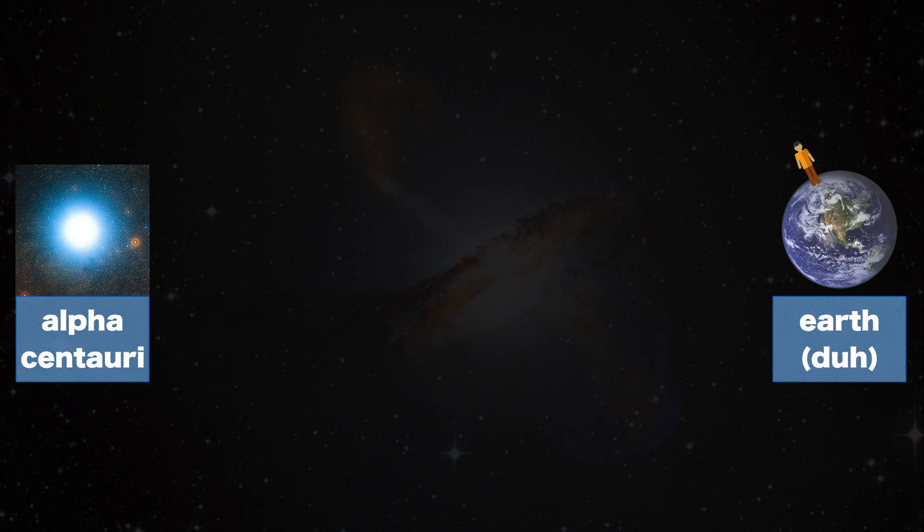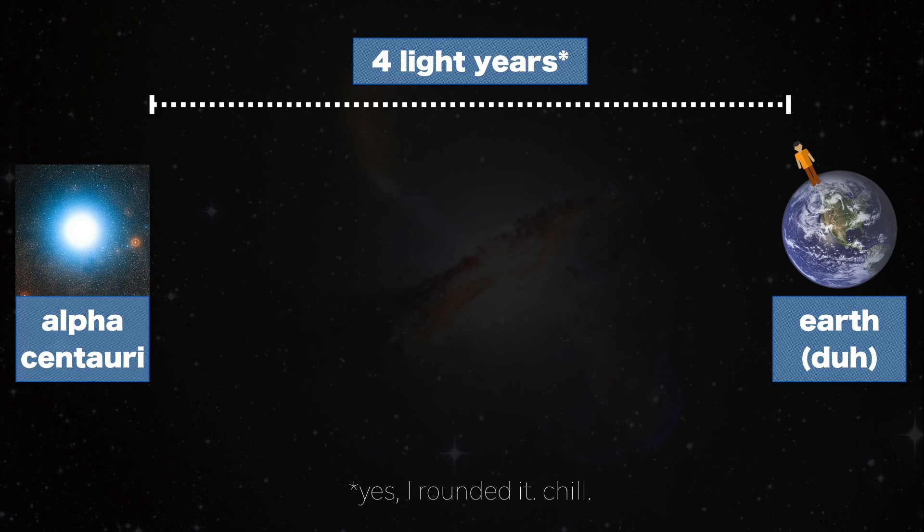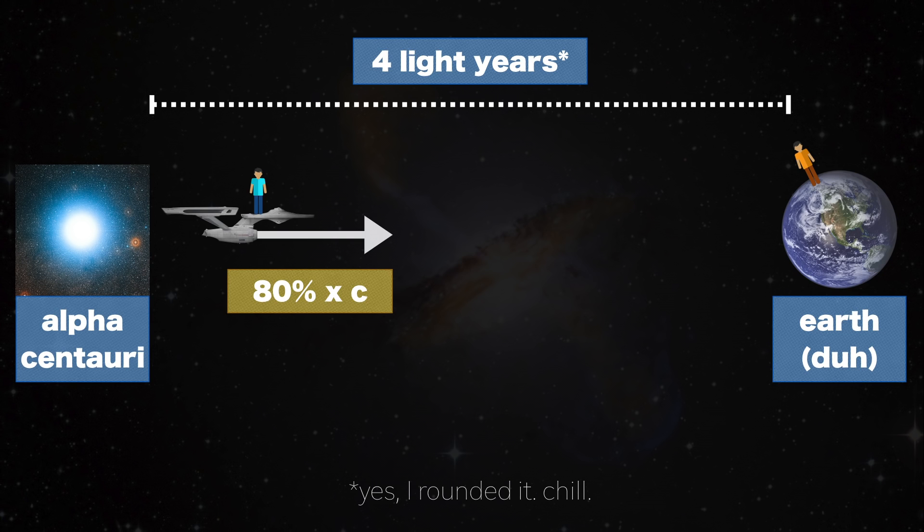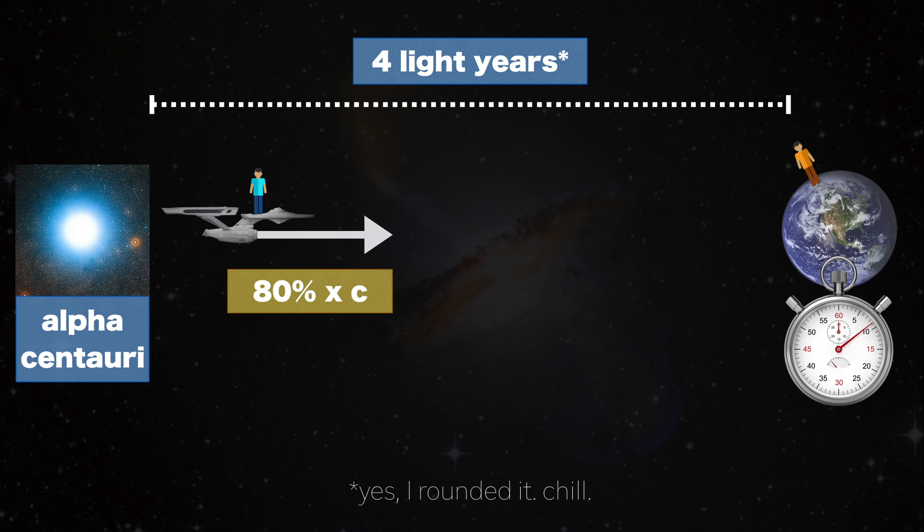Say Space Twin's turning point is Alpha Centauri, which is four light years away. Space Twin travels there at around 80% of light speed and back. Assuming instant acceleration for now, how much time will Earth Twin measure while Space Twin is on his journey?